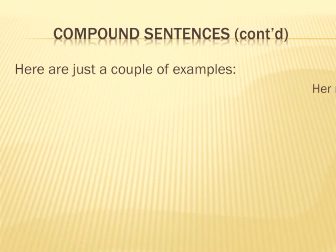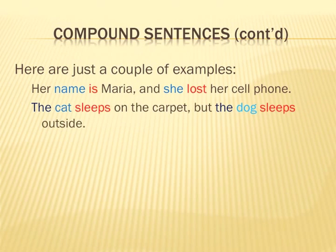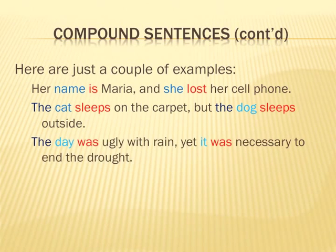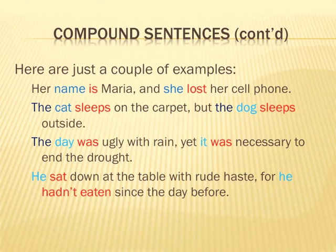More examples of compound sentences: 'Her name is Maria, and she lost her cell phone.' 'The cat sleeps on the carpet, but the dog sleeps outside.' 'The day was ugly with rain, yet it was necessary to end the drought.' 'He sat down at the table with rude haste, for he hadn't eaten since the day before.' Notice each consists of two independent clauses joined by a coordinating conjunction preceded by a comma.